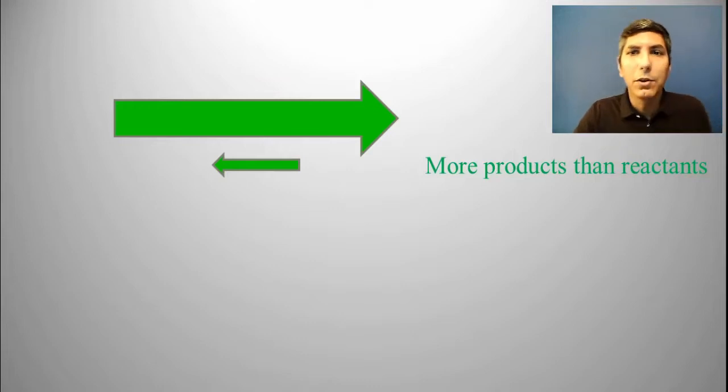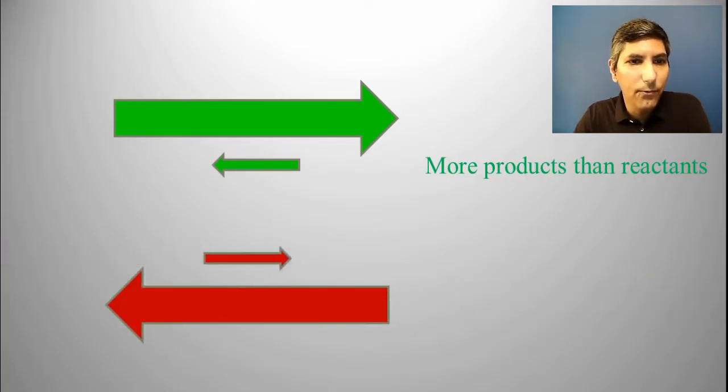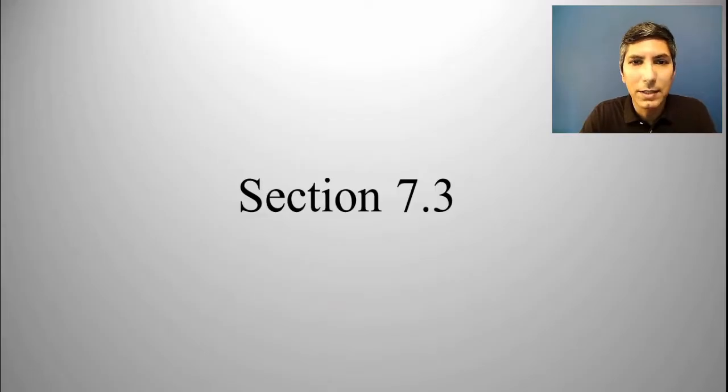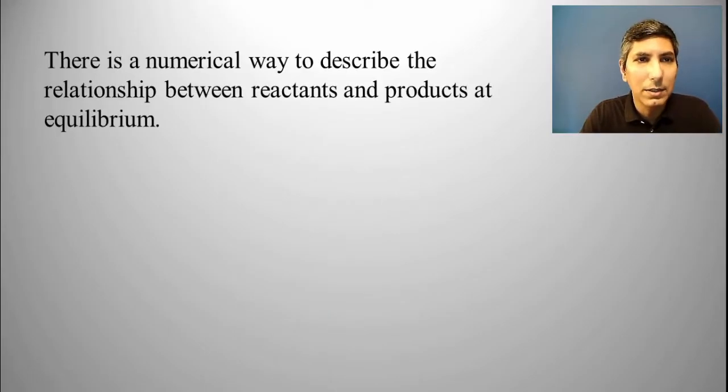Likewise, if we have the opposite process, if we have perhaps a very fast reverse reaction but a very slow forward reaction, that means that when we attain equilibrium, we're going to have a whole lot more reactants than we have products. You need to be aware of those relative rates and how they affect the position of equilibrium. Now, as we move on to Section 3 here in Unit 7...